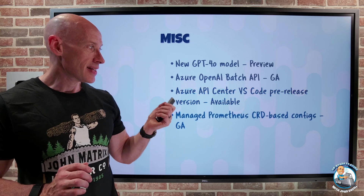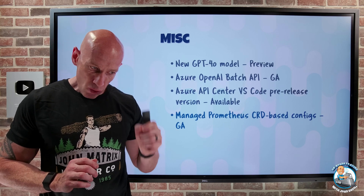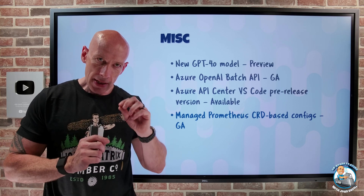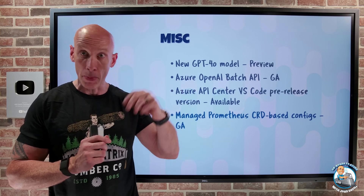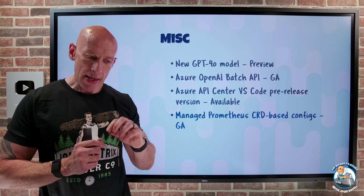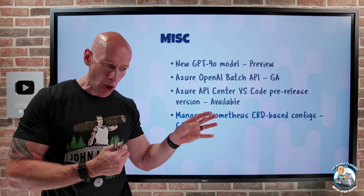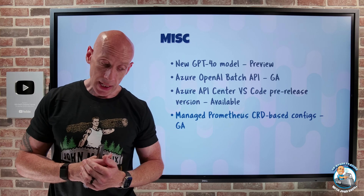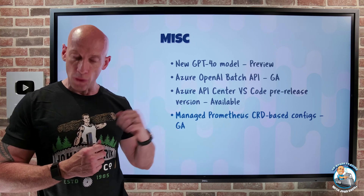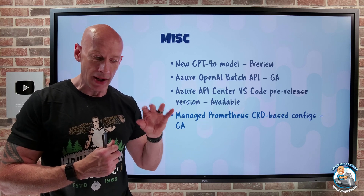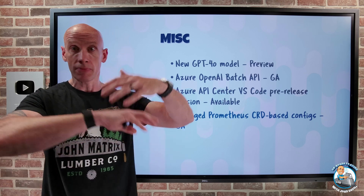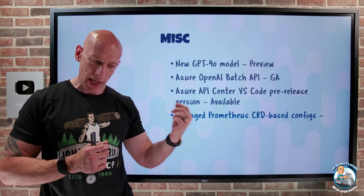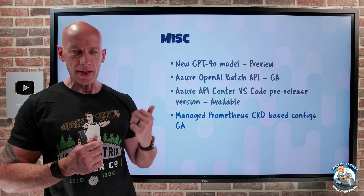Managed Prometheus now has CRD-based configs — CRD being custom resource definition. The Azure Monitor Managed Prometheus service provides a special type of workspace that gives Prometheus compatibility for ingestion and the use of PromQL to query. The CRD-based config is how I can configure the scrape jobs that collect metrics for pods and service monitors in my AKS cluster. For example, with a GPU-enabled AKS cluster I could use this to grab extra performance and health metrics from NVIDIA GPUs and visualize them in Managed Grafana. This lets me avoid having to update the config map in the kube-system namespace, using a method very similar to the OSS Prometheus operator.